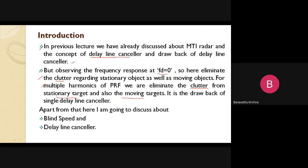There are so many harmonics received at the radar station in a moving target indication system. The single delay line canceller's main objective is to remove the DC components and to process the AC components. However, in an MTI radar system there are so many harmonics entering at the radar station, and at that stage some of the moving target indication signals are also eliminated by the single delay line canceller — that is the major drawback of the single delay line canceller. This problem is overcome by using the double delay line canceller.